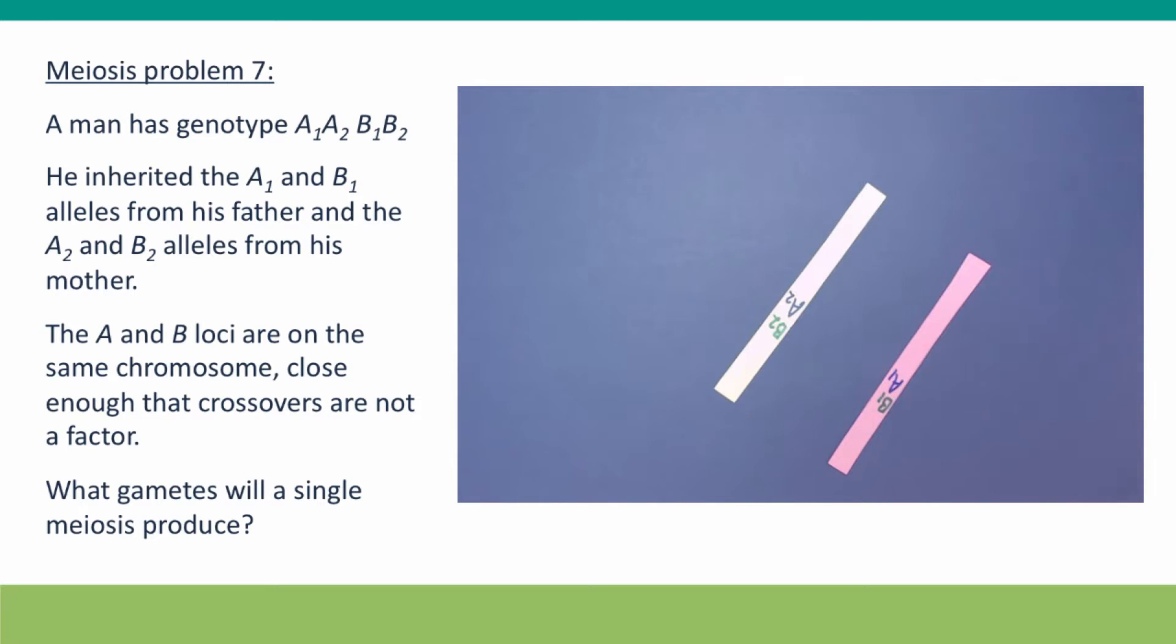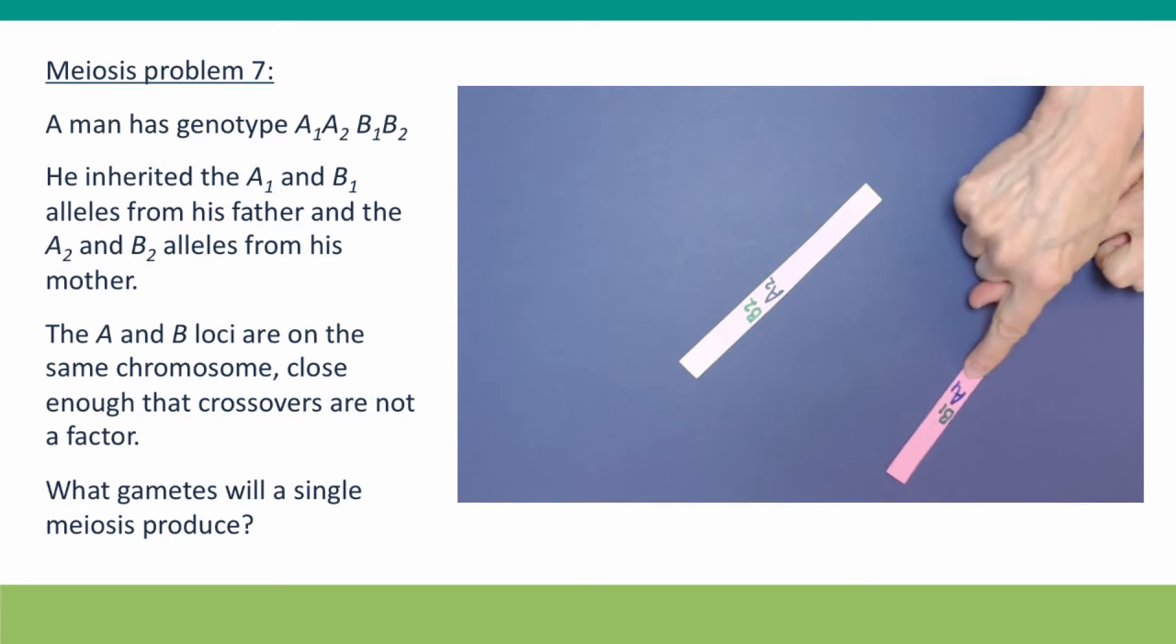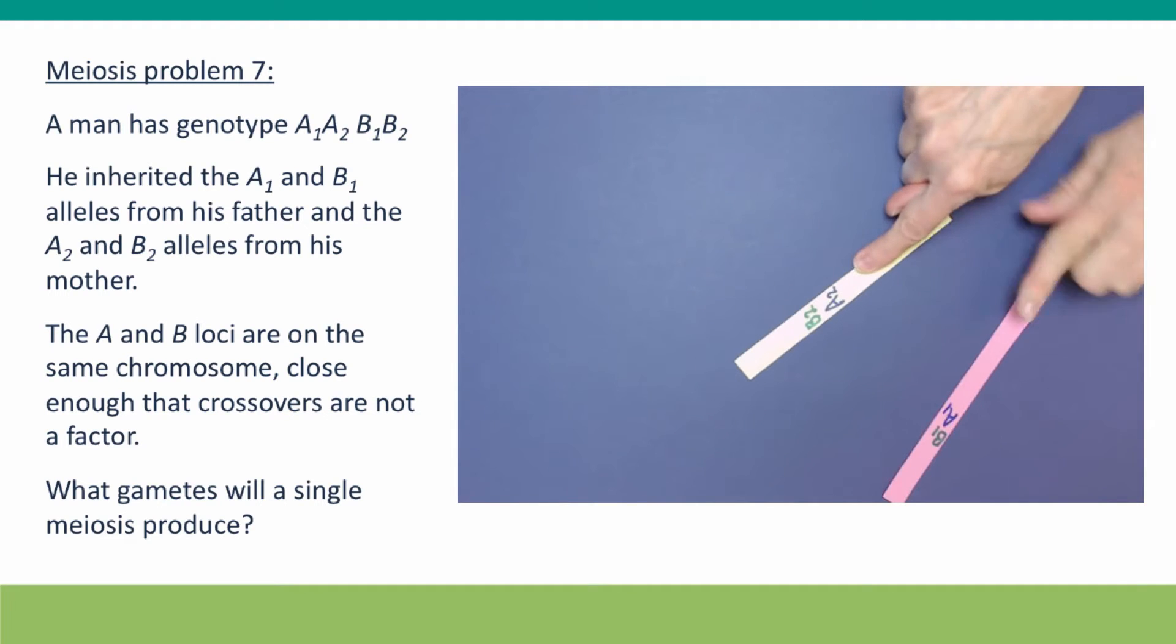We know that he inherited the A1 and B1 alleles from his father and the A2 and B2 alleles from his mother. That tells us that A1 and B1 must be on one homolog and A2, B2 on the other homolog. So now we can do the meiosis.